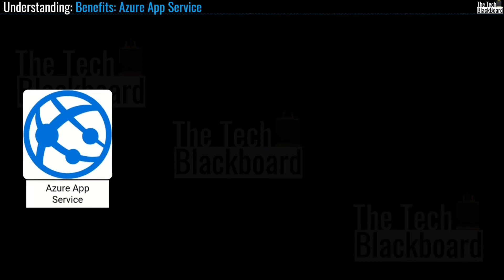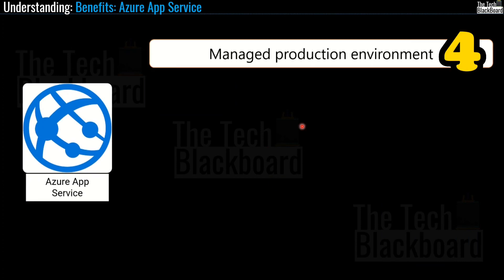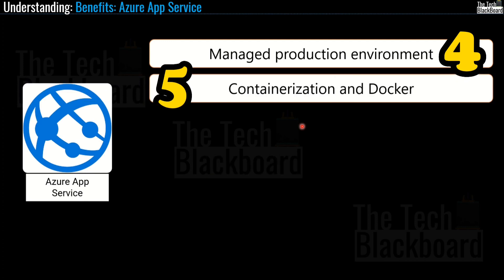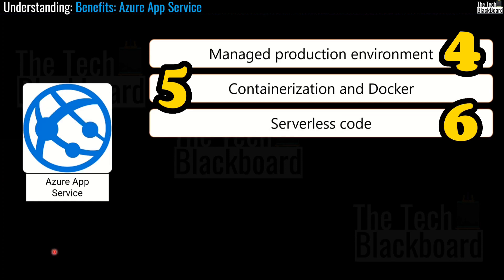The fourth benefit is that it is a managed production environment — App Service automatically patches and maintains the operating system and language frameworks for you, so you can focus on writing apps and let Azure worry about the platforms. Fifth, you can dockerize your apps and host a custom Windows or Linux container in App Service. And at number six, we have serverless code — you can run a code snippet or script on demand without explicitly provisioning infrastructure and pay only for the compute time your code actually uses.